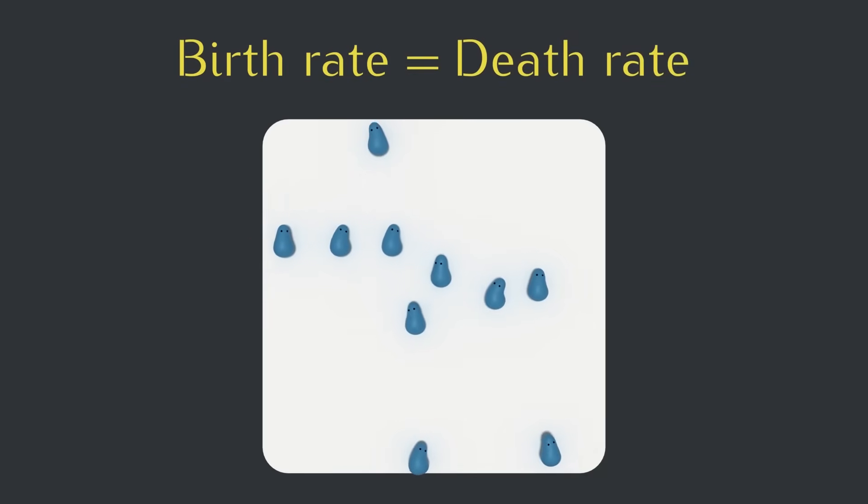The starting point from before was to set the total birth rate equal to the total death rate. When these are equal, we expect some creatures to die each time step, but we expect the same number to appear to replace them. The overall expected change in the population would be zero. So how can we extend this thinking to make a function equation?